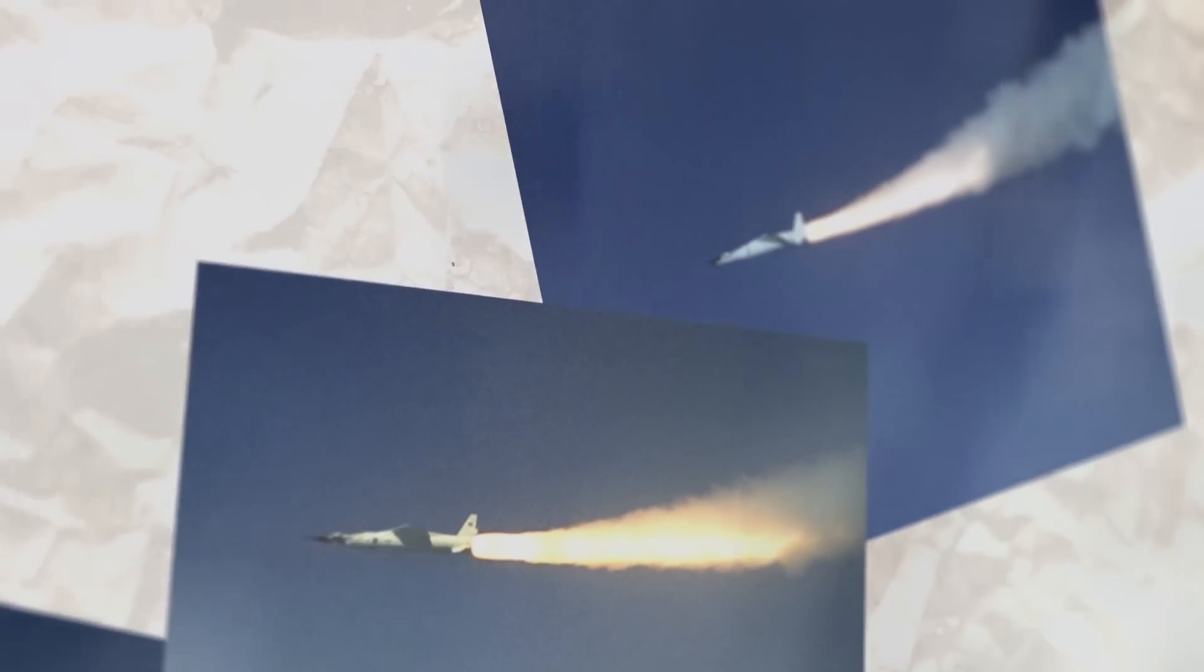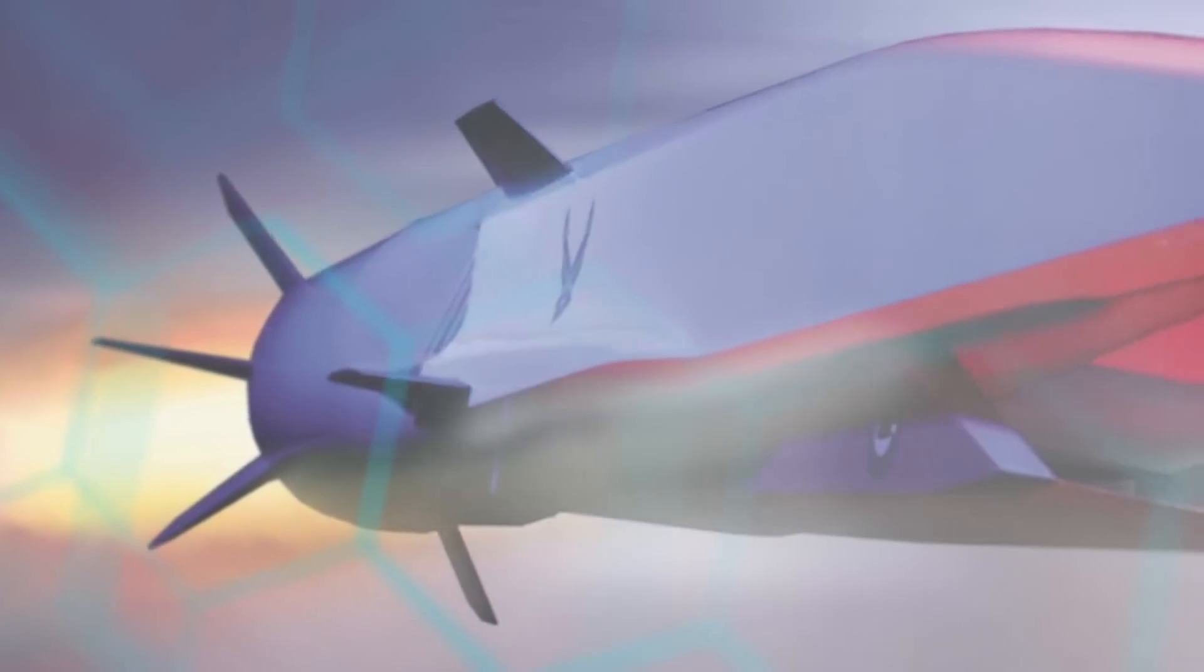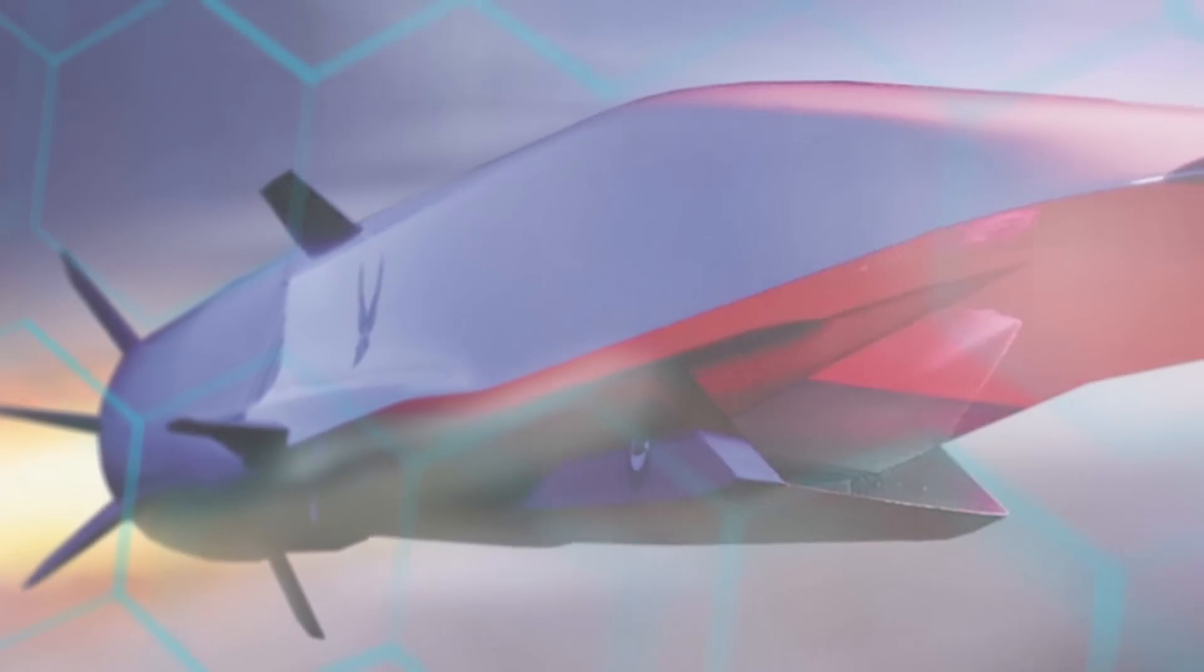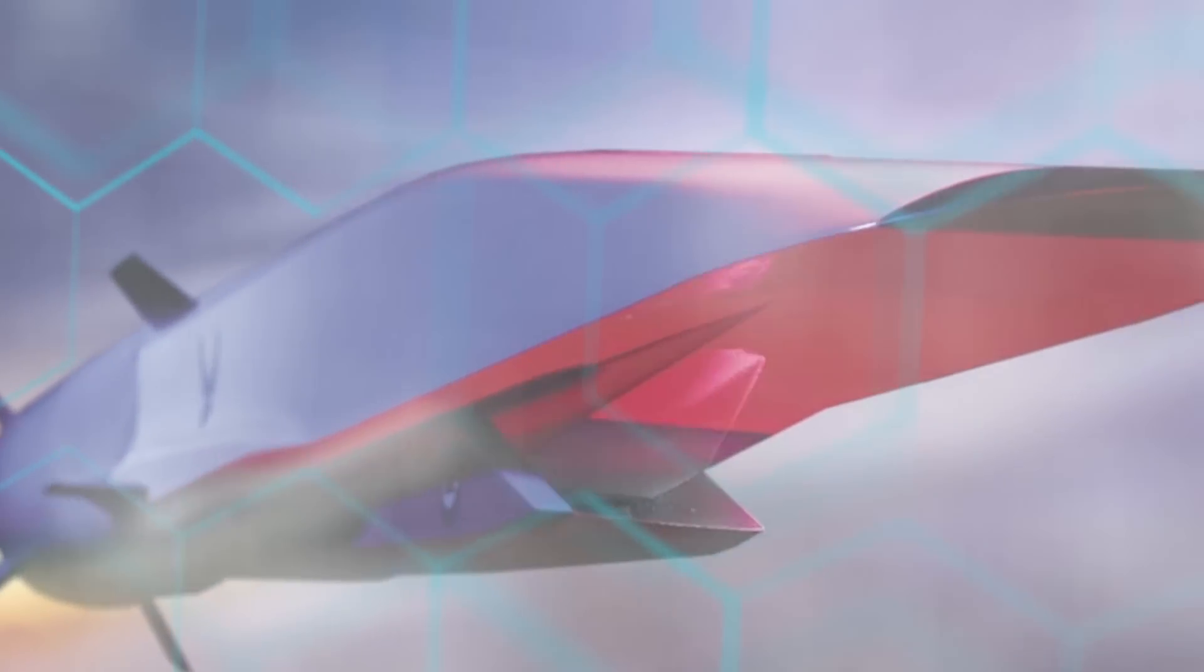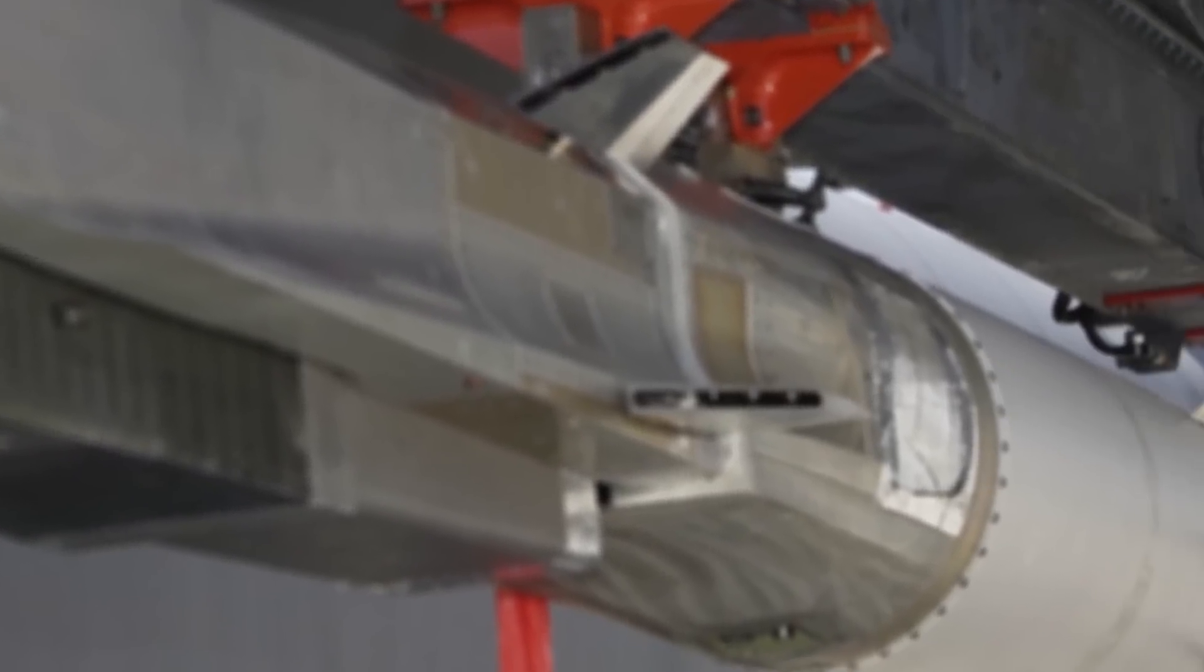But only to give way to another prototype. The Boeing X-51 replaced the X-43, and immediately, it had quite a strange appearance. Basically, this is a cruise missile without wings.